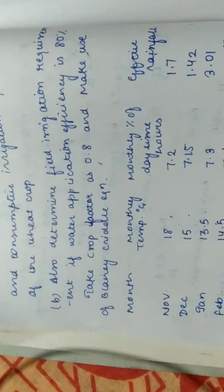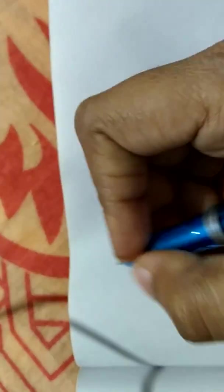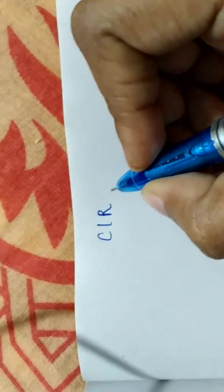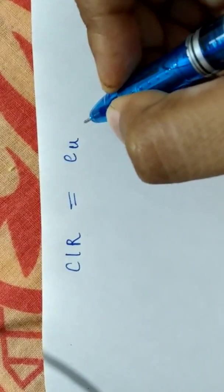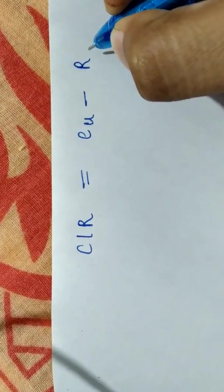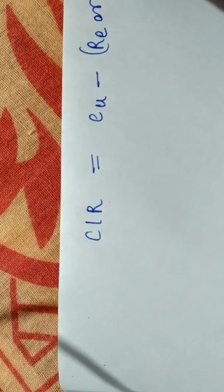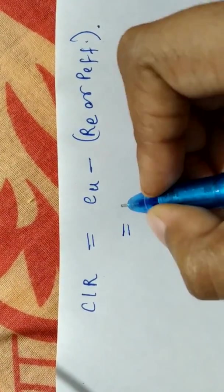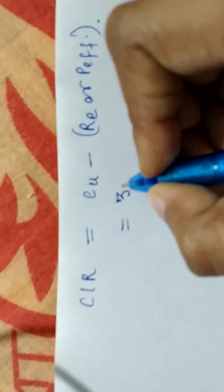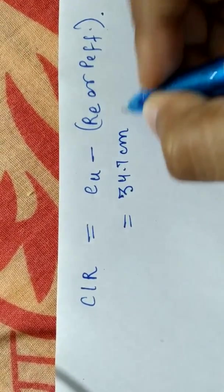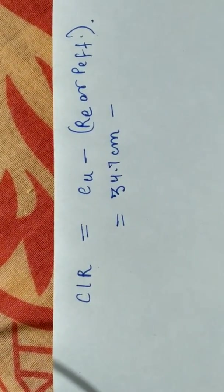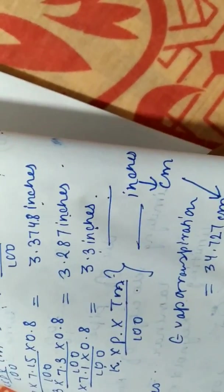So I can write consumptive irrigation requirement will be what is my consumptive use minus what is my effective rainfall. I can write it as RE or P effective. So here I got 34.7 centimeter as my consumptive use. Consumptive use is nothing but evapotranspiration which I got here. So that is my evapotranspiration for that season.